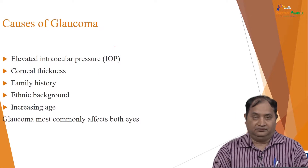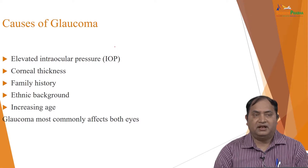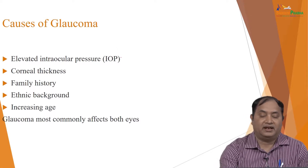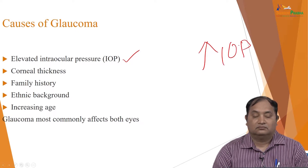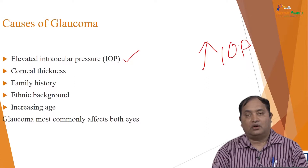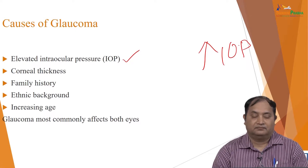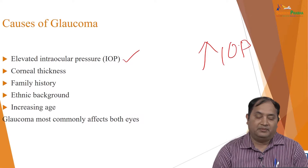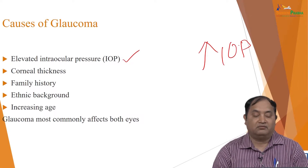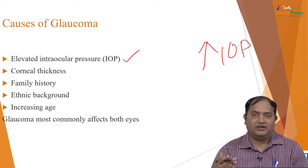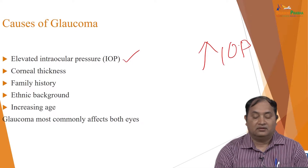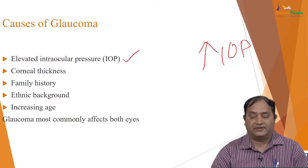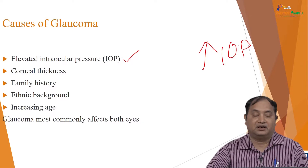Typical symptoms include elevated intraocular pressure and the patient may also present with increased corneal thickness. There could be a family history or ethnic background, and as age progresses — typically beyond 50 years — chances of glaucoma are higher, particularly in females. Glaucoma mostly affects both eyes, not just a single eye.